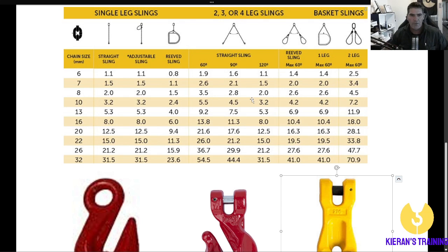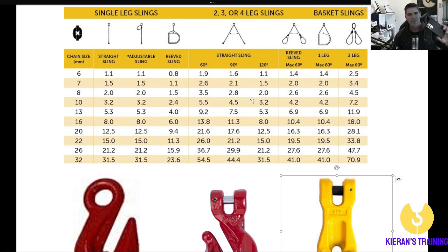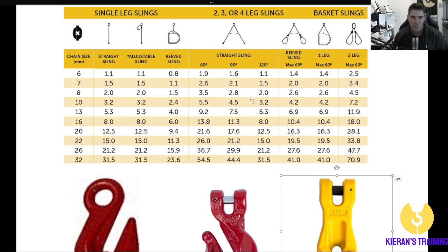A common question is: how do you know what the angle is? You're not going to sit there with a protractor. A good rule of thumb is if the legs of the chain are the same length as the distance at the base — essentially an equilateral triangle — that's going to give you 60 degrees. If the chains are longer than the base distance, it's going to be less than 60 and you're fine. If the chains aren't as long as the distance between the attachment points, you're going to be at least up to 90 degrees. To check for 90 degrees, most people have a square object handy — hold it up against the chains as a guide since that gives you a 90 degree angle. If it's less than that, use the 90 degree figure; if it's more, go to 120. Any square thing in your pocket works as a rough guide.